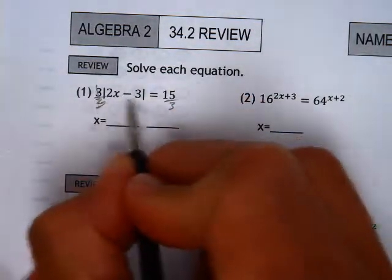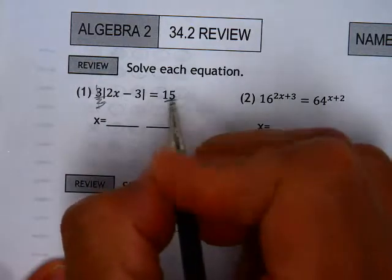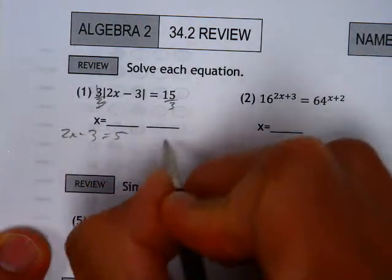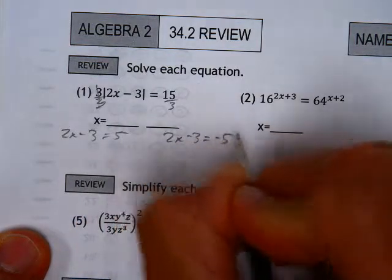Now, that gives me an absolute value of 2x minus 3 equals 5. I'm going to write that separately. 2x minus 3 equals 5, but 2x minus 3 could also equal negative 5.